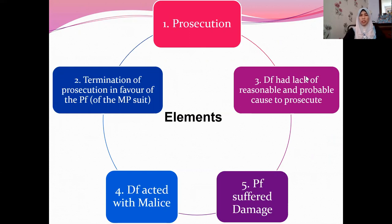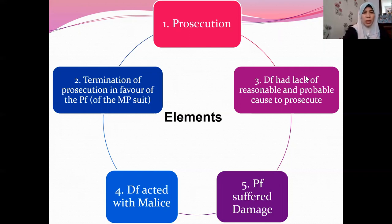The five elements are: first, prosecution; second, termination of prosecution in favour of the plaintiff; third, the defendant had no reasonable and probable cause; fourth, the defendant acted with malice; and fifth, the plaintiff must prove that he suffered some damage or losses because of the malicious prosecution.